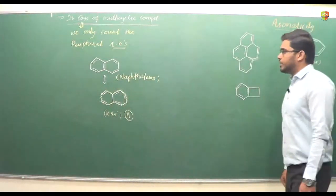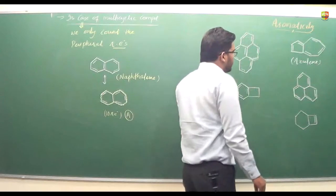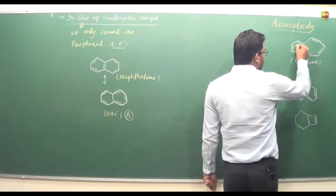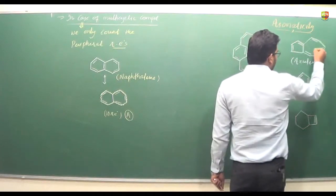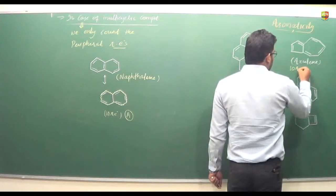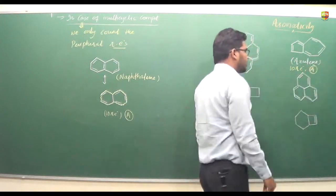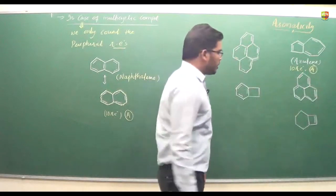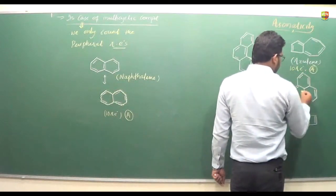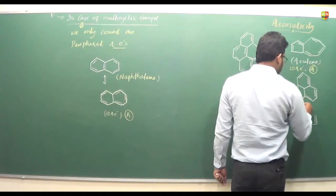How many pi electrons do we have here? 1, 2, 3, 4, 5 — so 10 pi electrons. It follows Hückel's rule and is aromatic in nature. In another example, the count is 2, 4, 6, 8, 10, 12 — so it has 12 pi electrons.